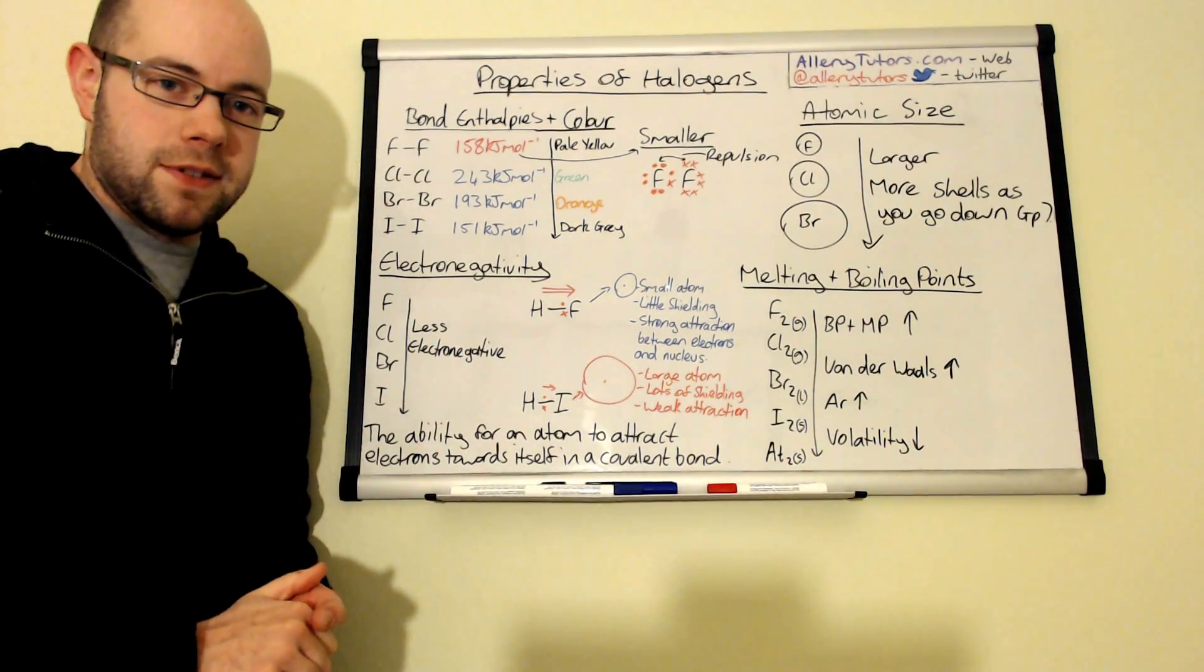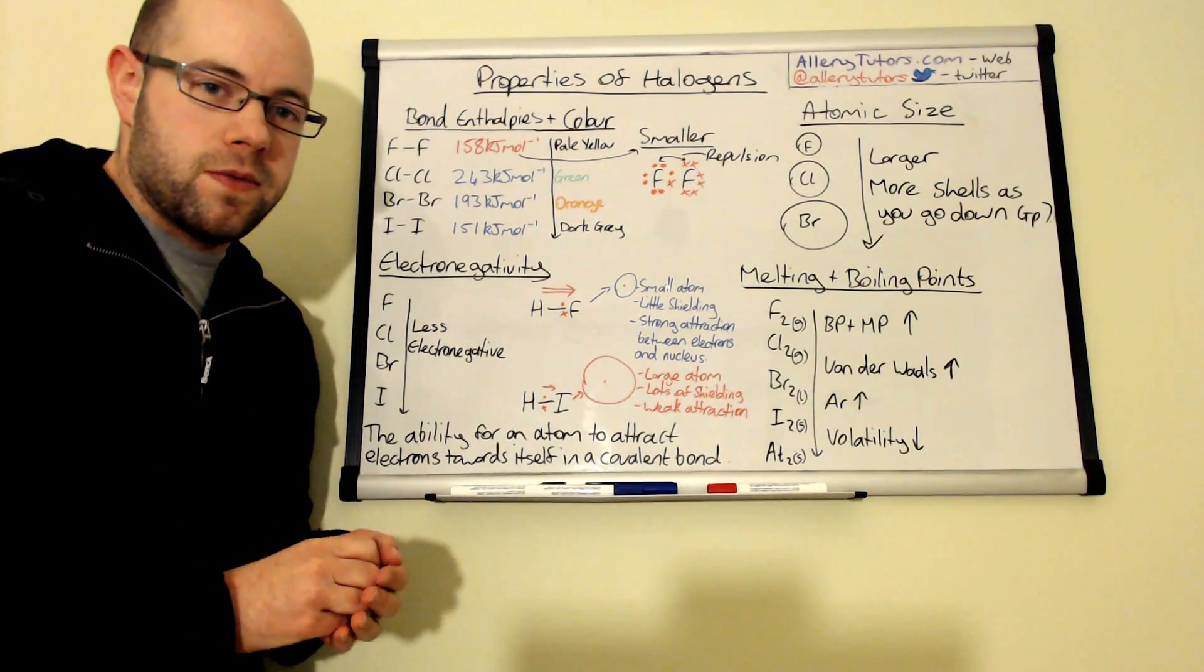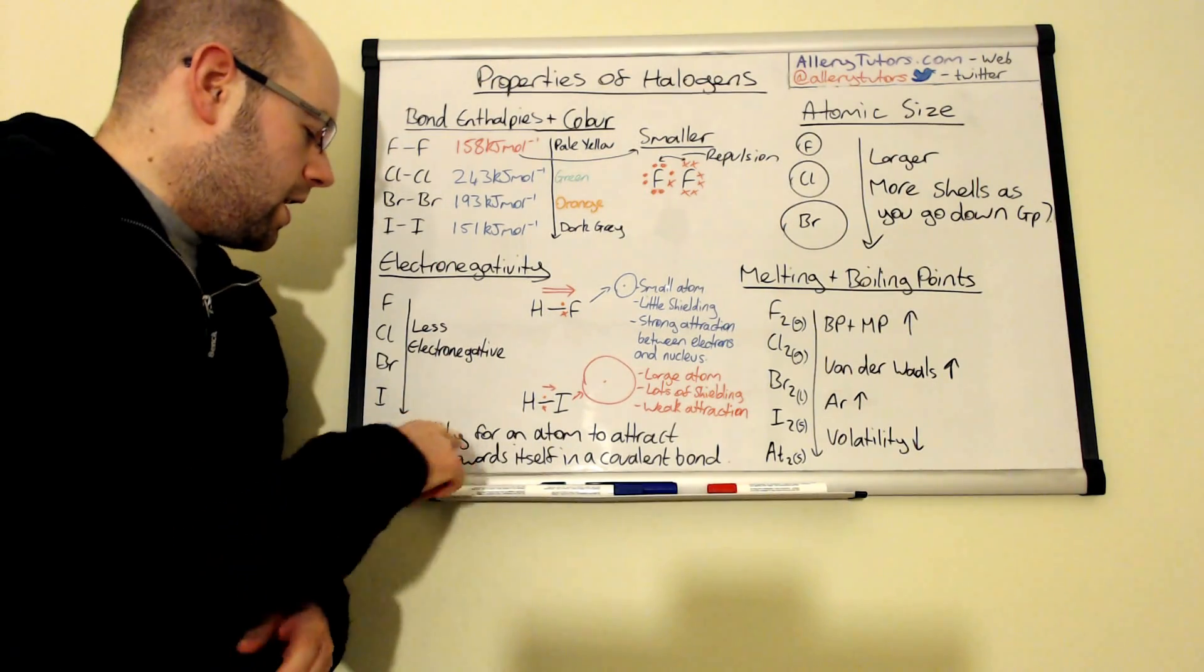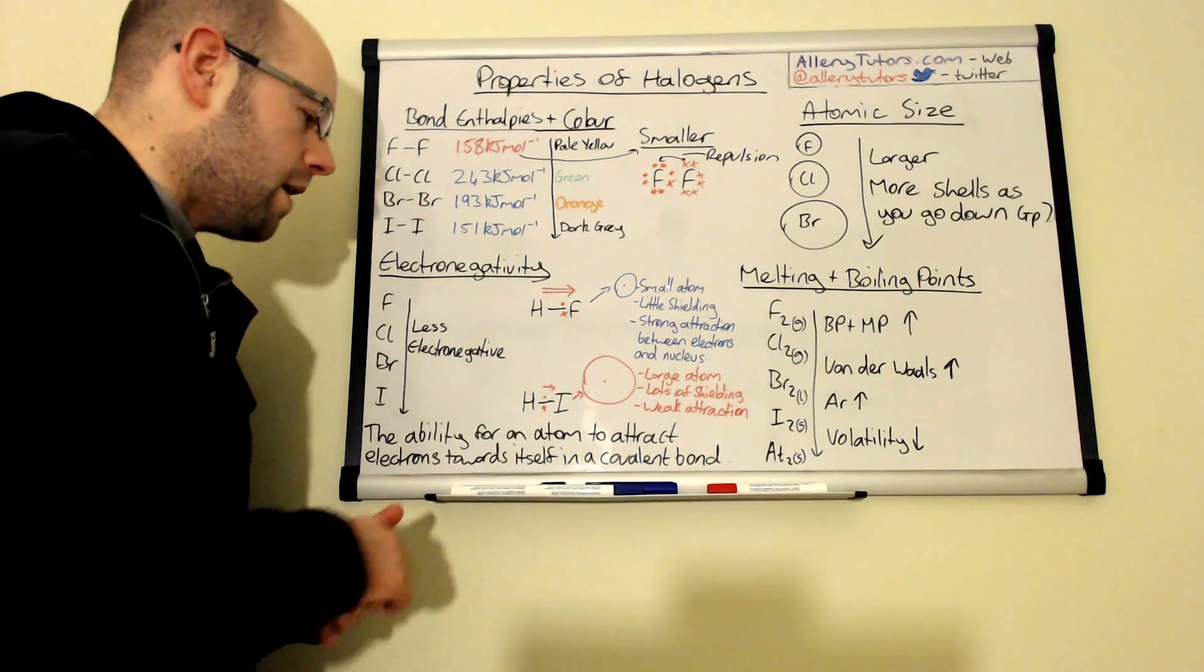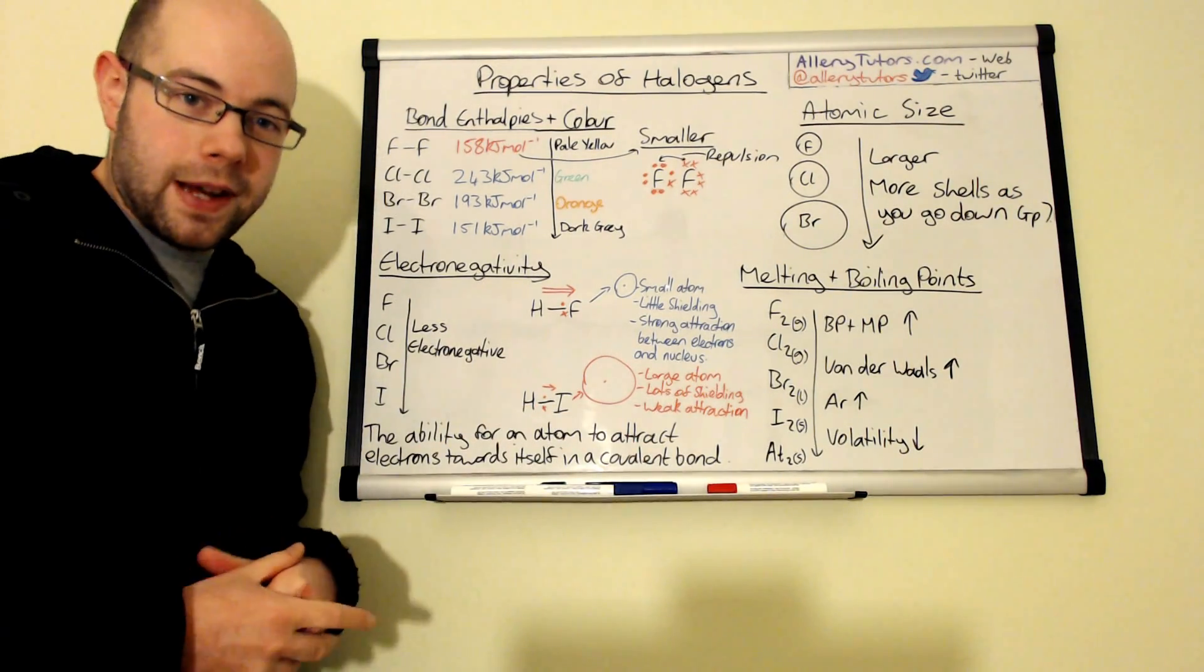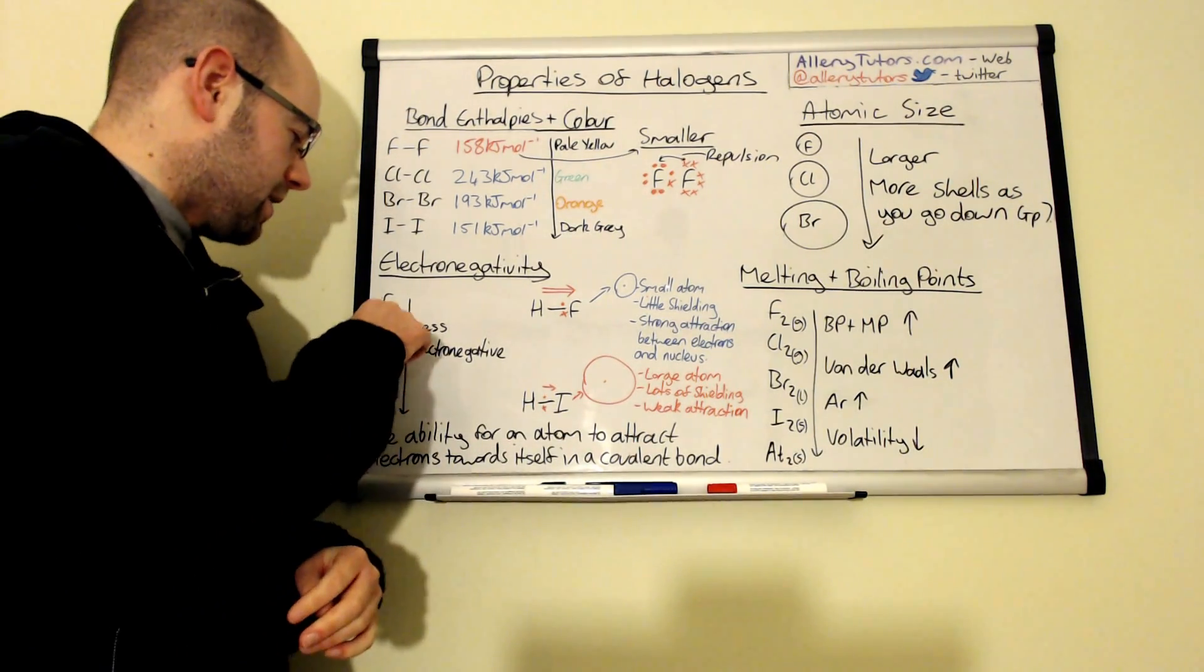Just coming on to electronegativity, now definitions are very important to help us to understand and electronegativity is basically the ability of an atom to attract electrons towards itself and that's got to be in a covalent bond.